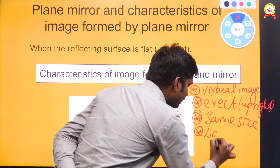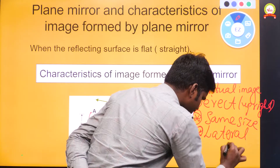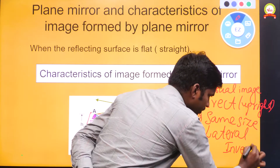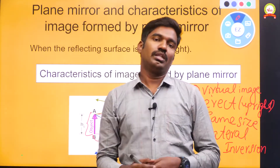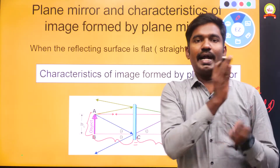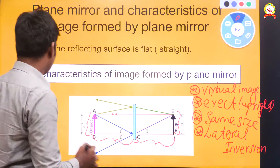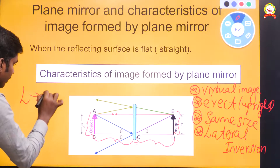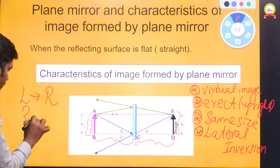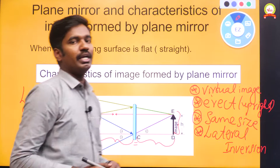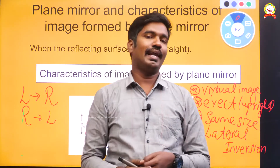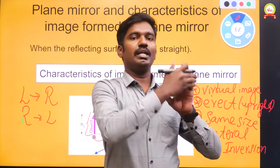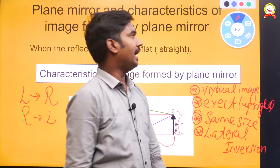The fourth characteristic is lateral inversion. What is the meaning of the word lateral inversion? Already in our lower classes we studied this — the left side of the object is going to appear as the right side, and the right side of the object is going to appear as the left side in the image. For example, if I raise my right hand in front of the mirror, my image will appear as though it is raising the left hand. That phenomenon is called lateral inversion.